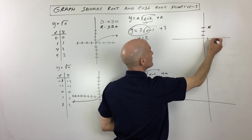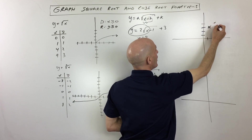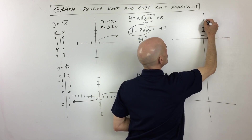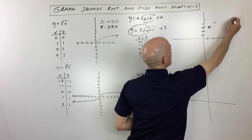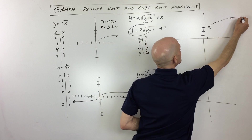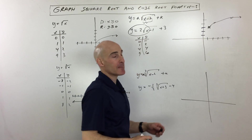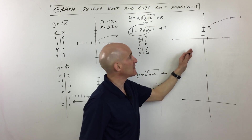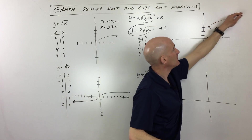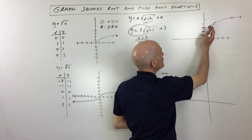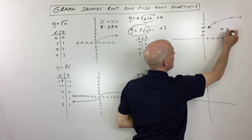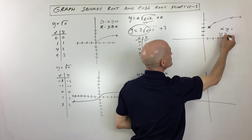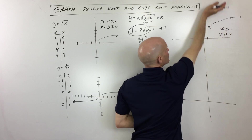So starting from (1, 3), plotting: right one up one, right four up two, and so on. You can see this graph is going up to the right — it doesn't go the other way. Sometimes students mistakenly continue it to the left, but it's only going up and to the right. So the domain would be x is greater than or equal to one, and the range would be y is greater than or equal to three.